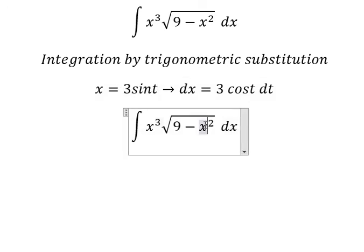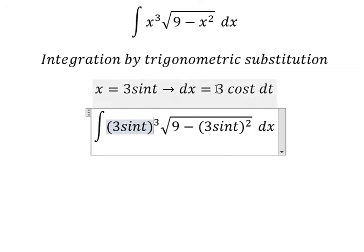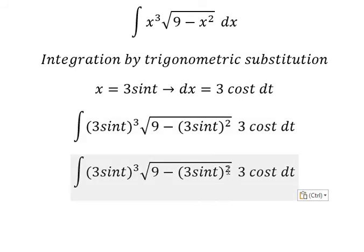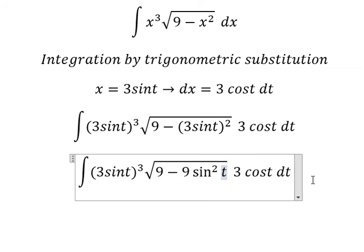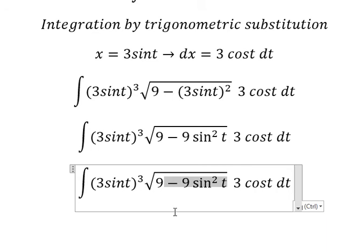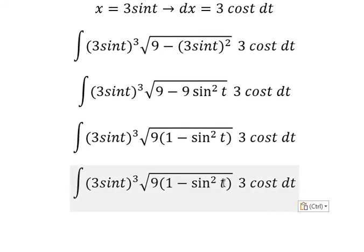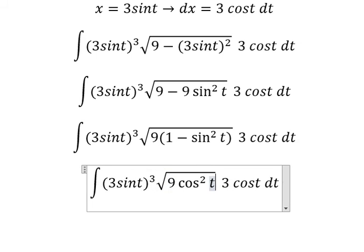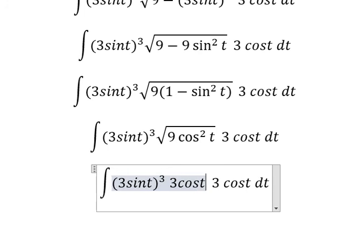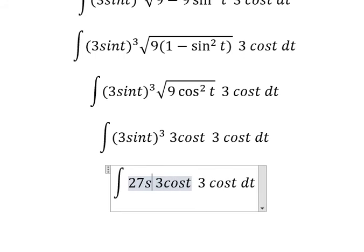I will put this substitution into the integral. The s is replaced by 3 sin(t). We have 9 sin²(t), and with factorization, 1 minus sin²(t) becomes cos²(t). The square root of 9 cos²(t) gives 3 cos(t). So this part becomes 27 sin³(t).